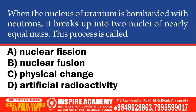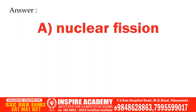When a nucleus of uranium is bombarded with neutrons, it breaks up into two nuclei of approximately equal mass. This process is called: Nuclear Fission, Nuclear Fusion, Physical Change, or Artificial Radioactivity. And the correct answer is Nuclear Fission.